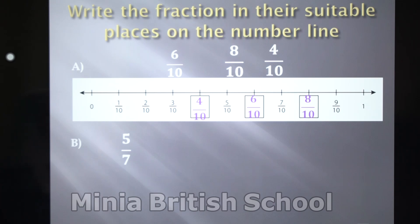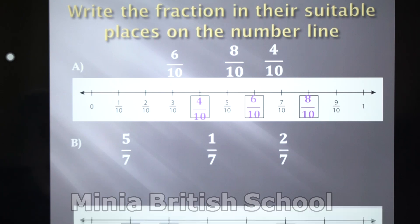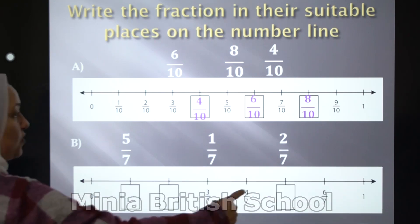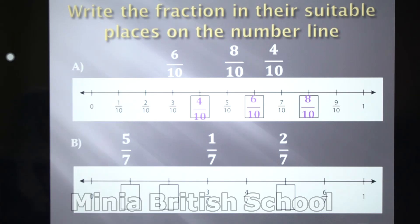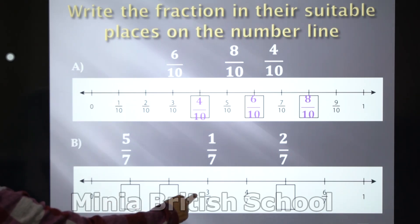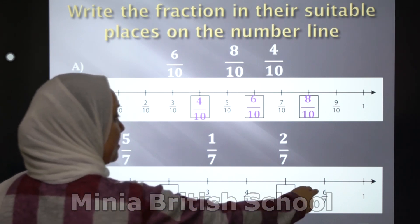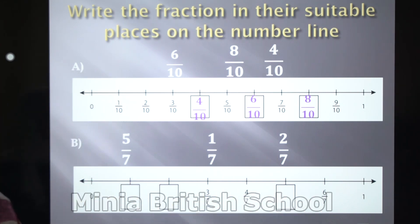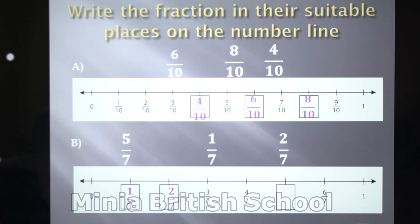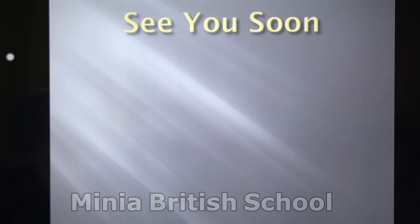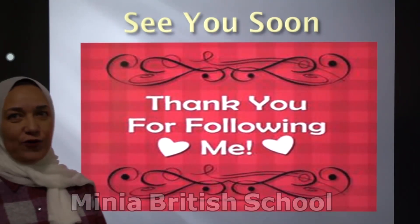Excellent! Great work. Letter B: you have 5 over 7, 1 over 7, and 2 over 7. You have the number line starting from 0 and ending at 1, with spaces for: blank, 2 over 7, blank, 3 over 7, 4 over 7, blank, and 6 over 7. Which fraction is the first? Yes, it's 1 over 7. After that 2 over 7, 3 over 7, 4 over 7, and then 5 over 7. Thank you, great work — see you soon, and thank you for following me. Goodbye!